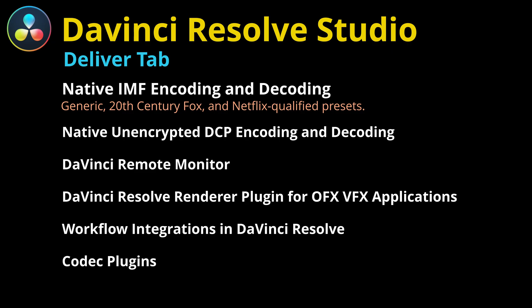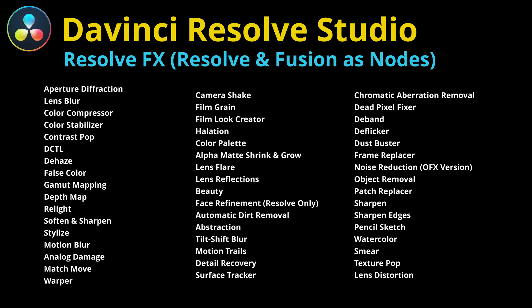A lot of the good encoding you'll use these days is not available within the free version. Here is a list of nodes that are not available in the free version — these are basically Resolve effects nodes available within Fusion as nodes. There are a lot of nodes we use on a daily basis that are not available in the free version, including the surface tracker and object removal.